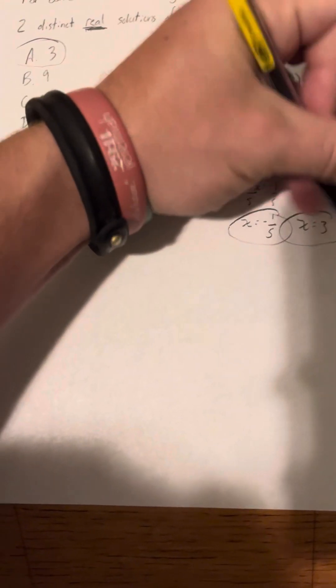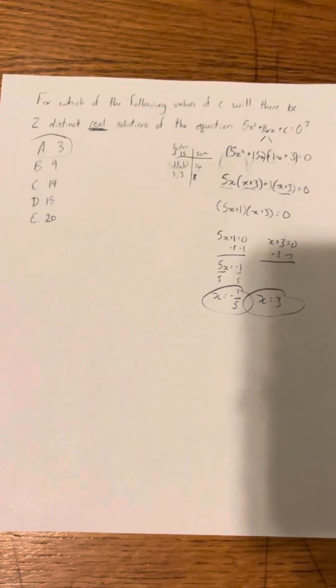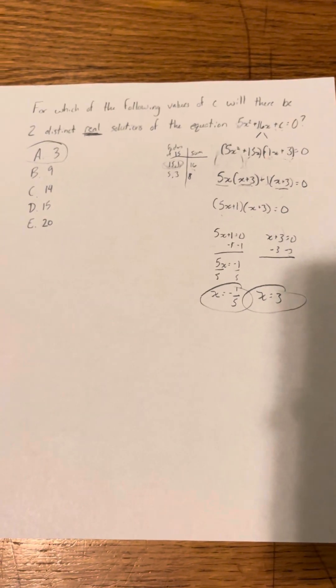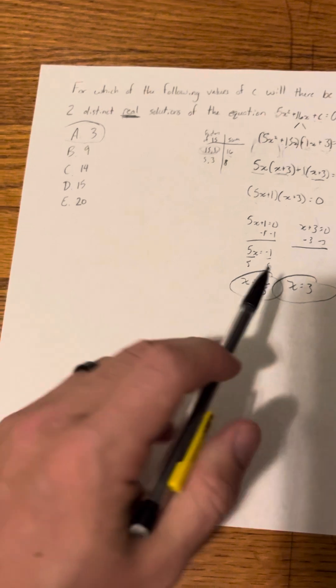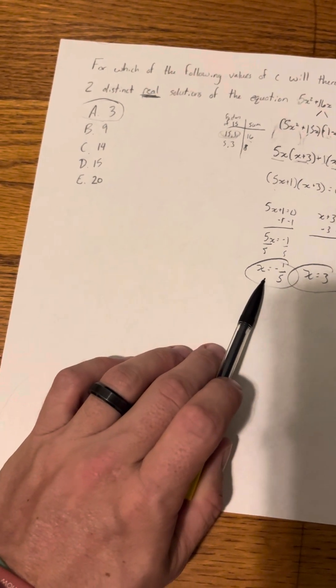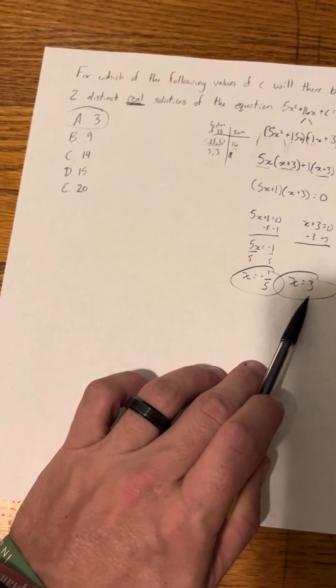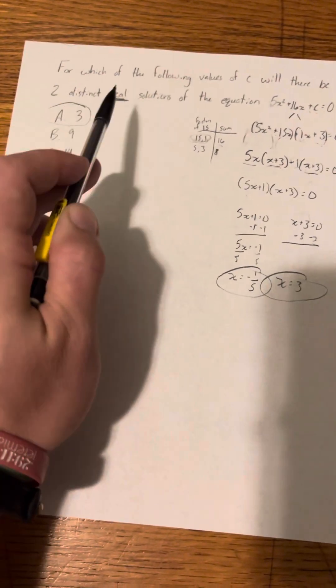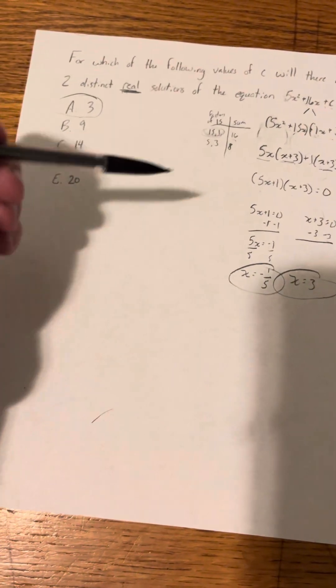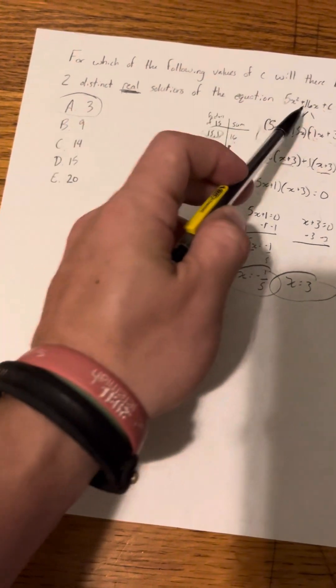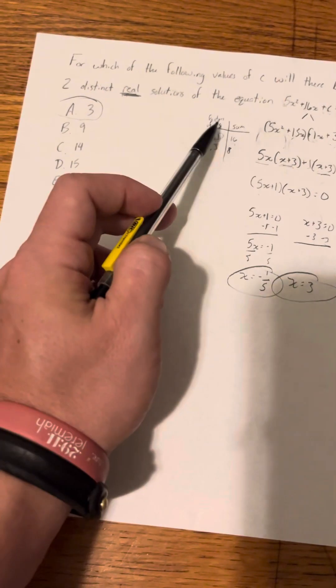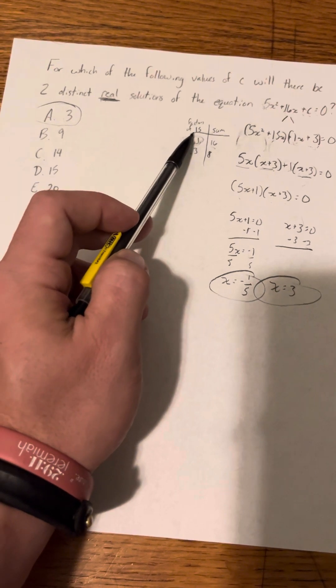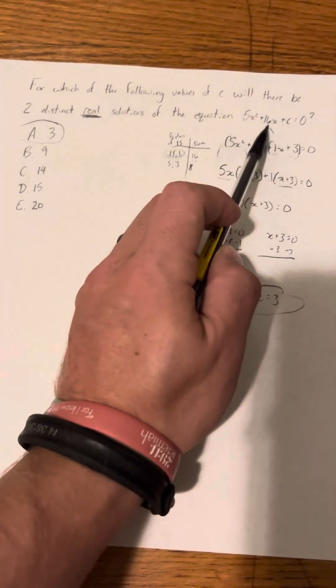So like if you have a problem like this and they actually have to, you actually have to find the solutions, that's how you do it. So my solutions here would be x equals negative 1 fifth and x equals negative 3. Again, with this problem specifically though, all they want to know was which value you plug in to get real numbers. And that was 3 because when you plug in 3, you're able to find 2 factors of 15 that equal 16. And that's how you do it.